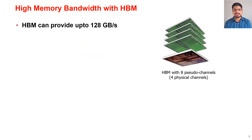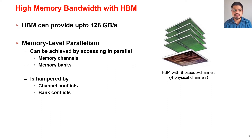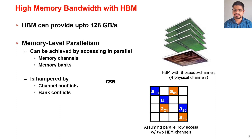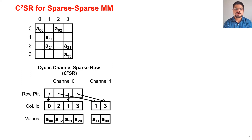Modern 3D stacked memory technologies such as HBM can provide memory bandwidth of up to 128 Gbps with eight channels, but achieving this requires exploiting memory-level parallelism by accessing different channels and banks in parallel. In CSR, a single row is split across different channels and row parallelization incurs channel conflicts. To solve these issues, we propose a new sparse storage format called Cyclic Channel Sparse Row, or C²SR.